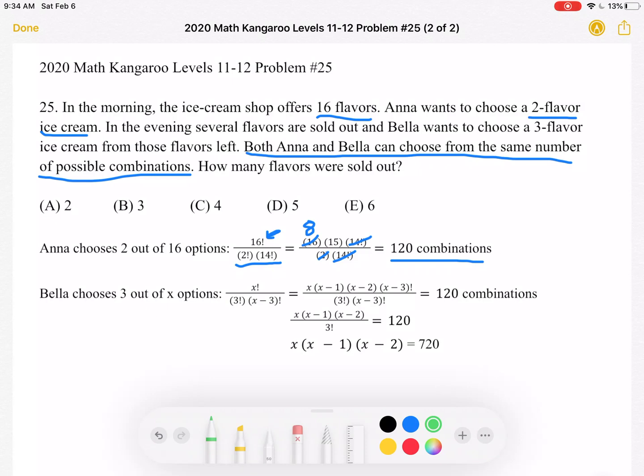Bella wants to choose a three-flavor ice cream from flavors left. So some flavors are sold out by the time Bella gets there. Let's say that X is the number of flavors that are left. So Bella's choosing three out of these X options, which gives us X factorial over 3 factorial times X minus 3 factorial, because we have three that we're choosing out of a group of X.